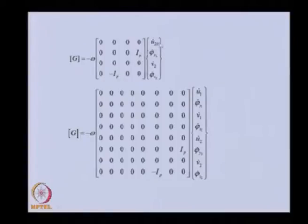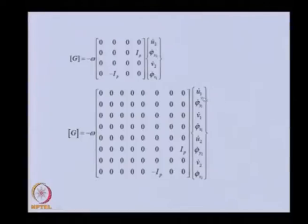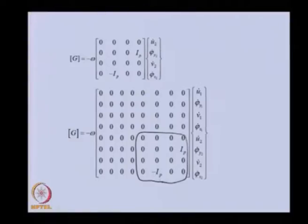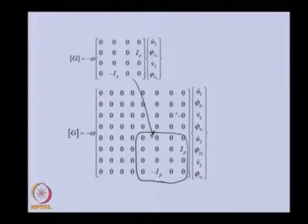In the finite element formulation, the field variable stacking has one linear then angular displacement for each node. We substitute u for x and v for y. The gyroscopic matrix takes a new form due to the changed variable ordering. When expanded for nodes 1 and 2, the original 4×4 gyroscopic matrix appears in the appropriate block, with all other terms equal to zero, giving an 8×8 matrix that can be coupled with the shaft elemental equations.